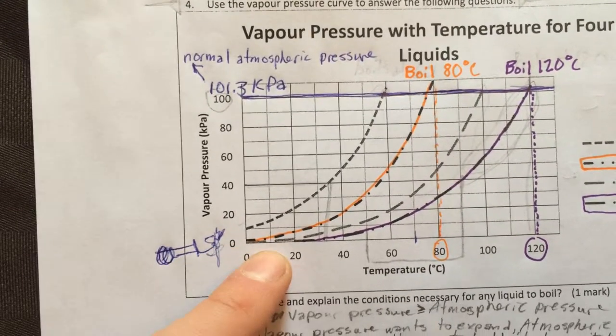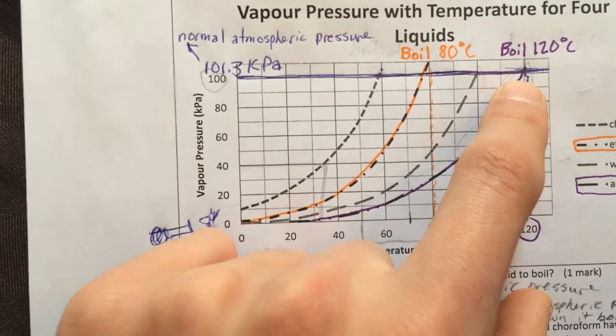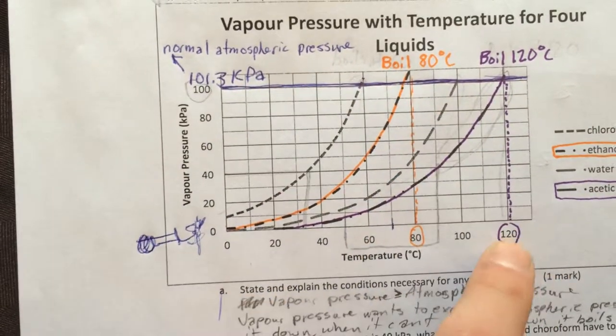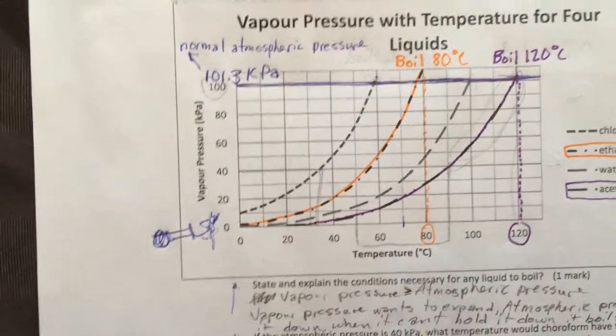If you look at acetic acid, follow the pressure up, you'll see that the normal atmospheric pressure boils at 120 degrees Celsius.